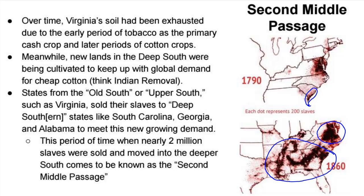Virginia's soil had been exhausted, and new lands in the deep south were being cultivated. With global demand for cheap cotton and Native Americans removed from the land — think of Worcester versus Georgia — the way was cleared for King Cotton. The profits from cotton crops drove the sale of slaves from the upper south into the deep south: South Carolina, Georgia, Alabama, the Mississippi River valley, and parts of the Tennessee River valley. Approximately two million slaves were sold into the deep south from the upper south.